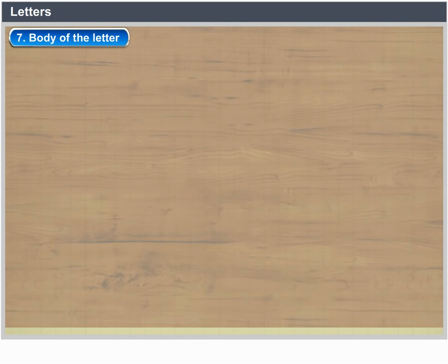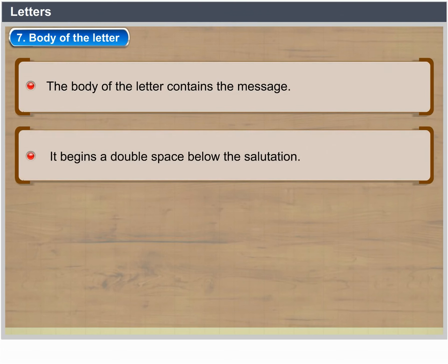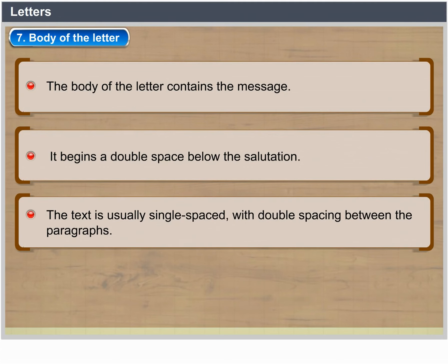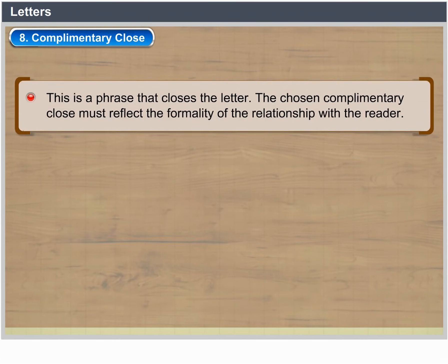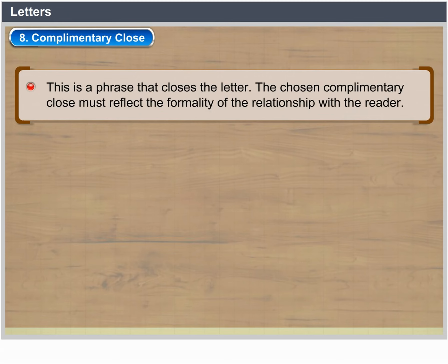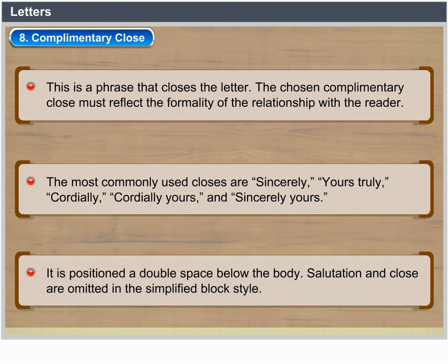Body: The body of the letter contains the message. It begins a double space below the salutation. The text is usually single-spaced with double spacing between paragraphs. Tables, numbered items, long quotations and other such material should be set up so that they are easy to read. Complimentary Close: This is a phrase that closes the letter. The complimentary close chosen must reflect the formality of the relationship with the reader. The most commonly used closes are Sincerely, Yours Truly, Cordially, Cordially Yours and Sincerely Yours. It is positioned a double space below the body.